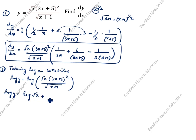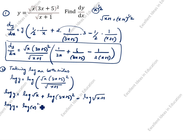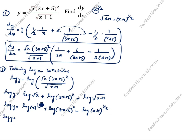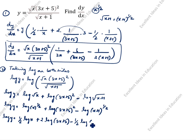log y is equal to log of root x plus log of (3x + 5) whole squared minus log of root of (x + 1). Now, root x is x to the power 1/2, and root(x+1) is (x+1) to the power 1/2. So log y equals (1/2) log x plus 2 log(3x + 5) minus (1/2) log(x + 1).